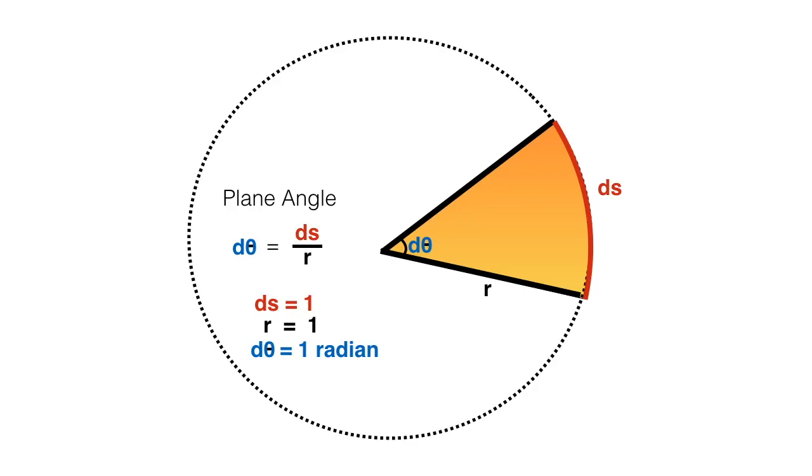Here units of ds and r will not make any difference as they will cancel out each other and these radians, that is d theta, will be dimensionless.